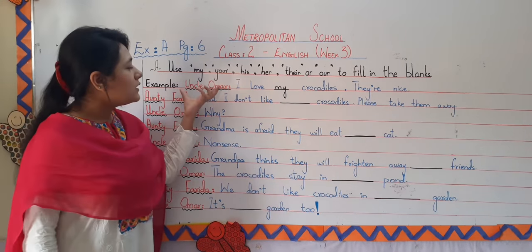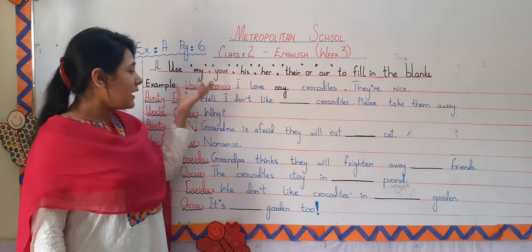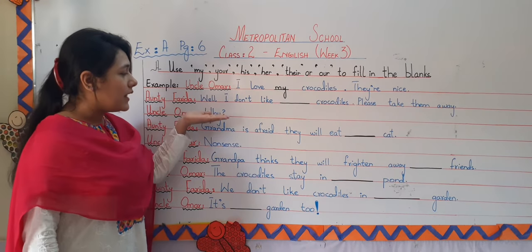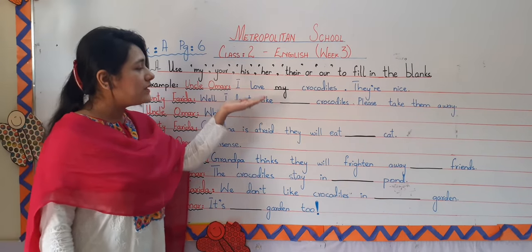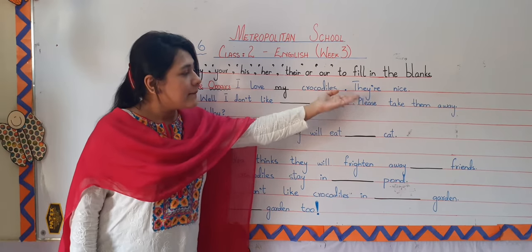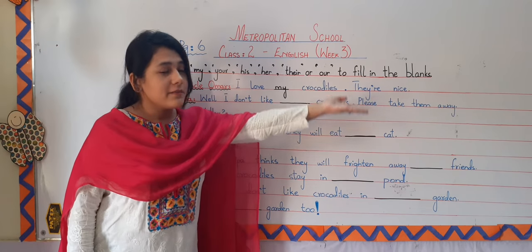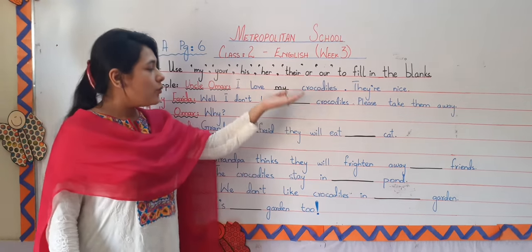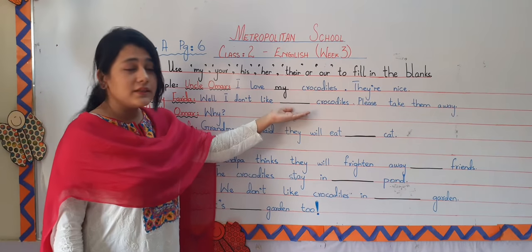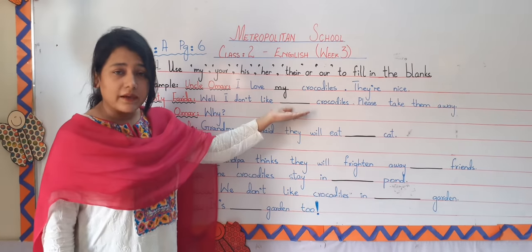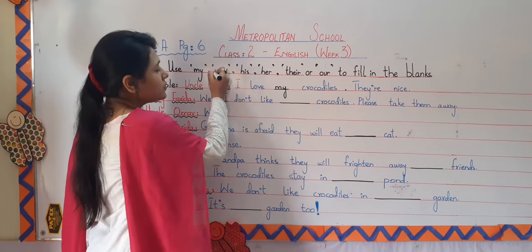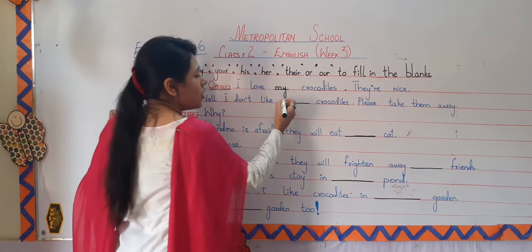In Uncle Umar's reply, Aunty Farida said, 'Well, I don't like dash crocodiles. Please take them away.' What are we going to use in this line? We are going to use 'your.'